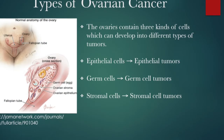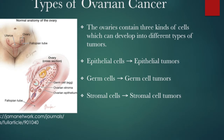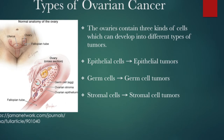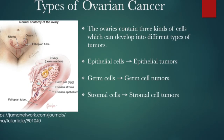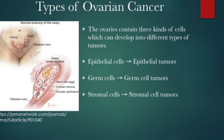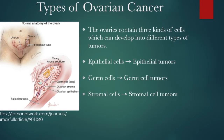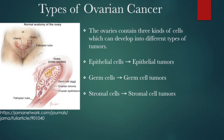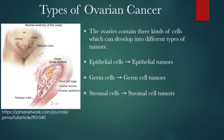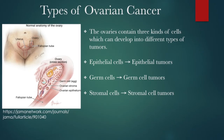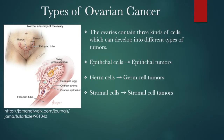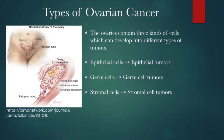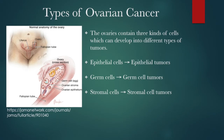The ovaries are made up of three kinds of cells, and each type of cell has the potential to develop into a different type of tumor. The epithelial cells cover the outer surface of the ovary and can become epithelial cell tumors. Germ cells are those that produce the ova for reproduction and produce germ cell tumors. Stromal cells form the structural tissue that holds the ovaries together, produce the hormones estrogen and progesterone, and can become stromal cell tumors.